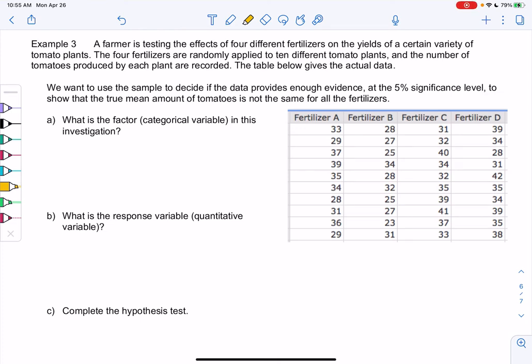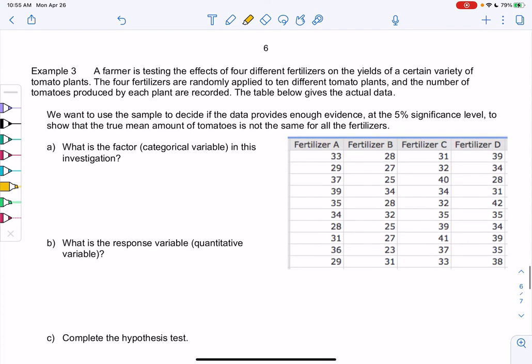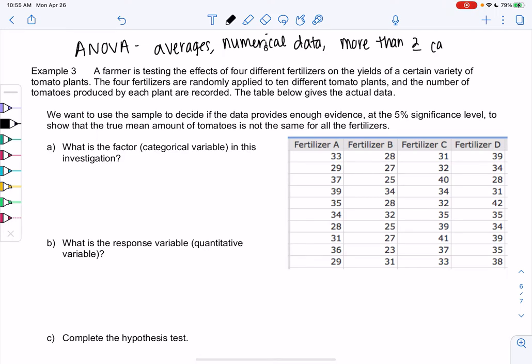Section 11, example 3. So we're doing ANOVA. Remember ANOVA is when we have averages, not proportions. So we're doing averages, numerical data, and we have more than two categories. Because for one or two categories we already had a method. So more than two categories or samples. So this is when we use ANOVA.